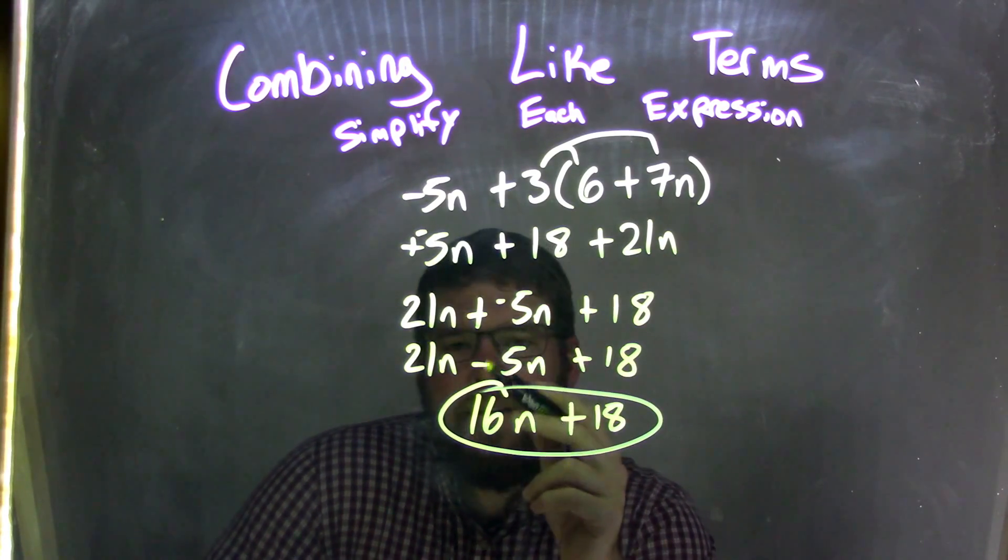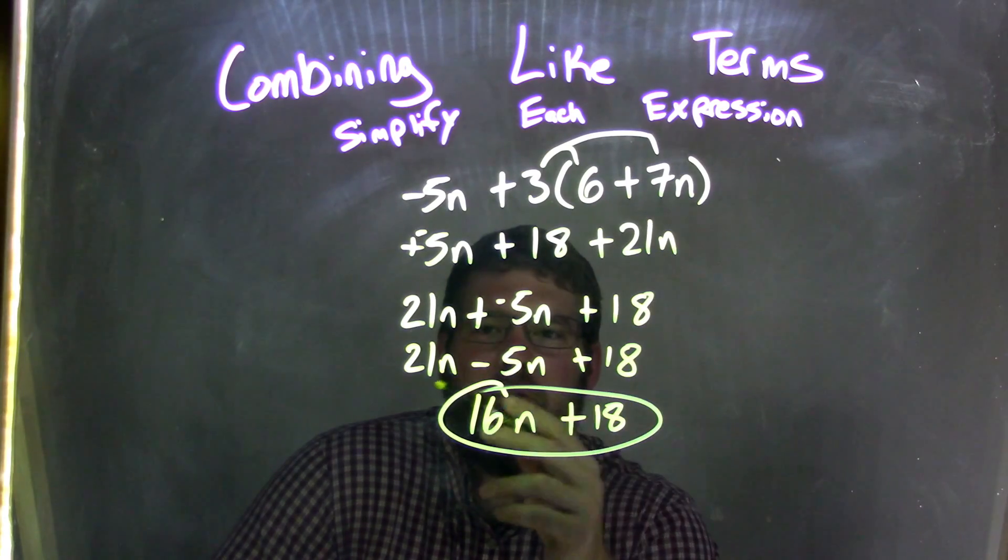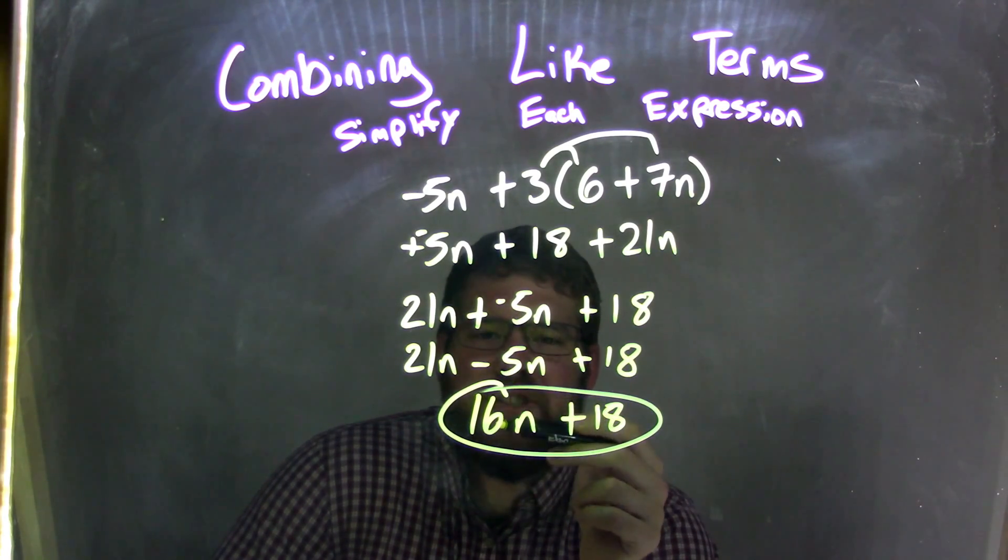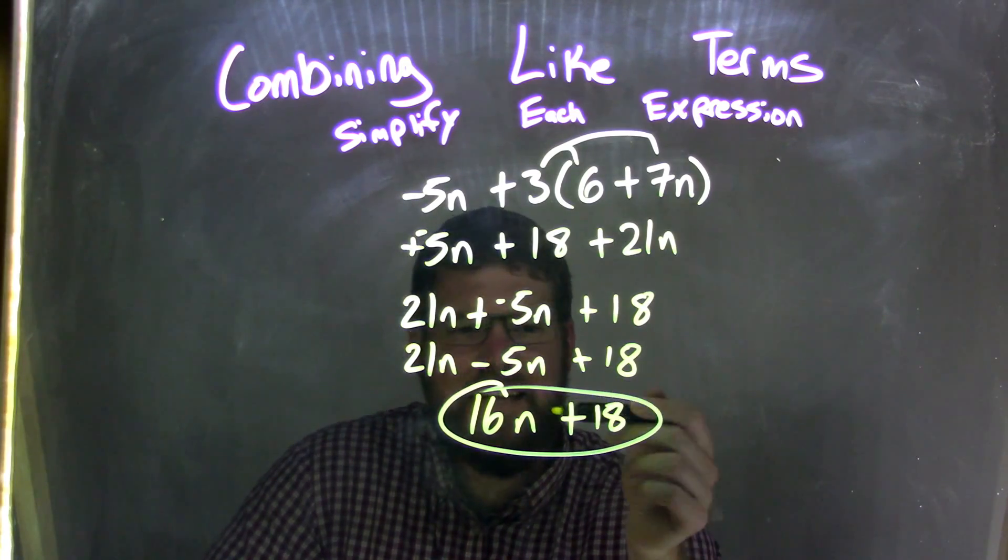So now adding a negative goes back to the subtraction. So we have 21n minus 5n plus 18. And 21n minus 5n is just 16n, bringing in the plus 18. And so my final answer is 16n plus 18.